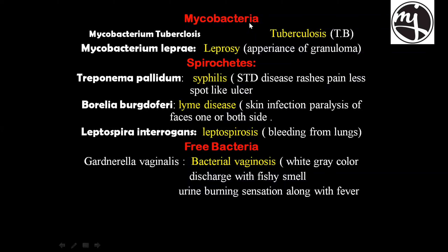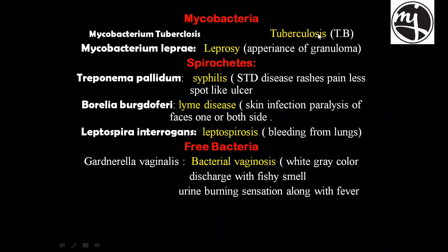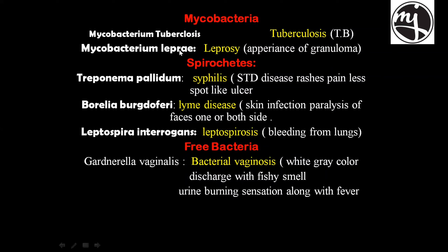Mycobacteria: Mycobacterium tuberculosis causes TB. TB is characterized by persistent cough and granuloma formation. A granuloma is a collection of macrophages — a collection of immune cells that we call granulomas.